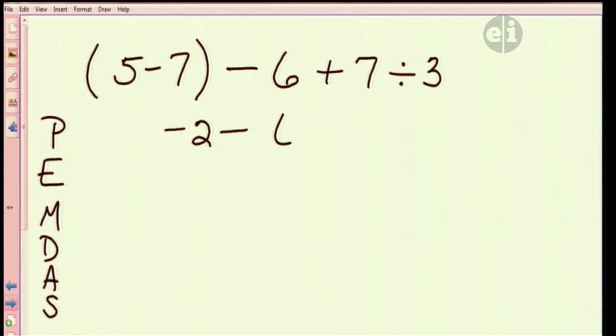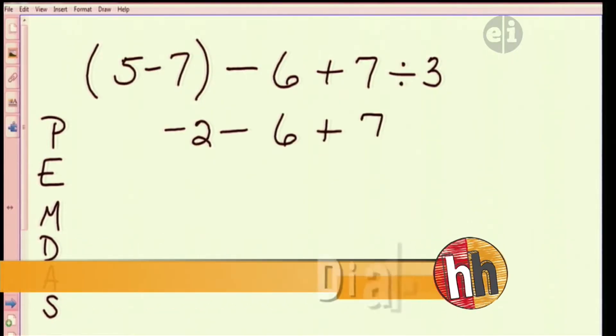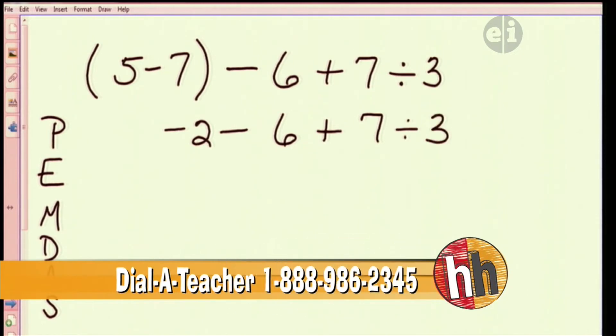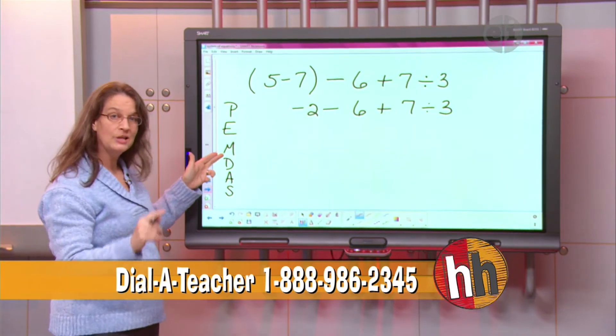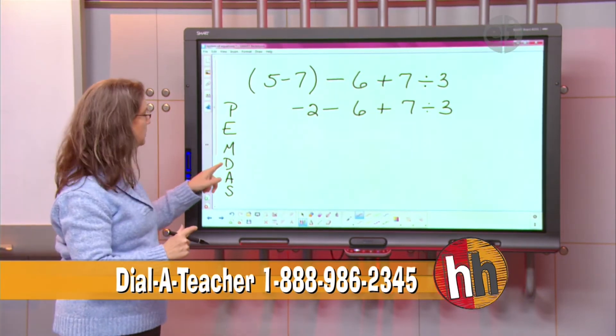Then what we do is I make my kids do a V format so that they continue writing everything down and they don't miss anything. The next thing is exponents. I don't have any of those here, so I can keep going. The next 2, left to right, are multiply and divide.